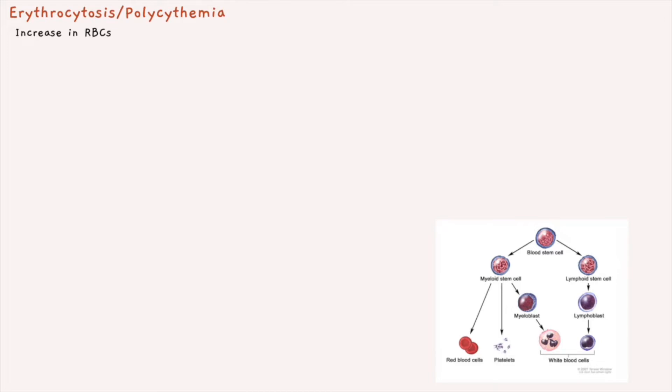You have your initial blood stem cell, which can differentiate into either a myeloid stem cell or a lymphoid stem cell. Red blood cells come from myeloid stem cells. Platelets come from megakaryocytes, also from myeloid stem cells. White blood cells can come from myeloblasts in the myeloid progenitor line, or from the lymphoid stem cell progenitor line, giving different types such as neutrophils, eosinophils, and basophils.